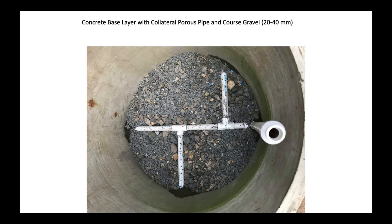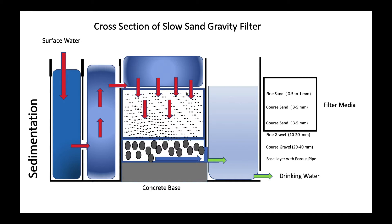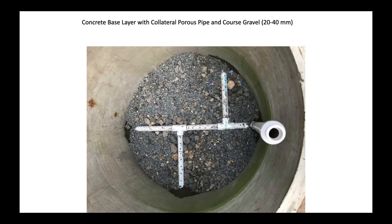This is the base layer with a porous pipe. There is a central pipe connected with laterals to enable water collected from various parts of the slow sand filter to be centralized to a central pipe. Water is filtered throughout the slow sand filter and cannot enter a single pipe, so laterals are made. The large stone particles are called coarse gravels, which prevent blockage of the porous pipe.